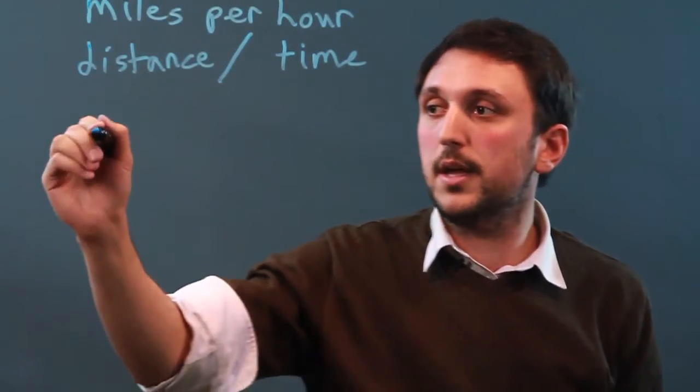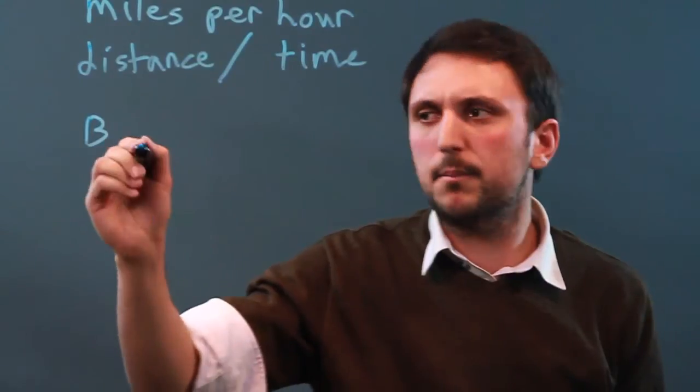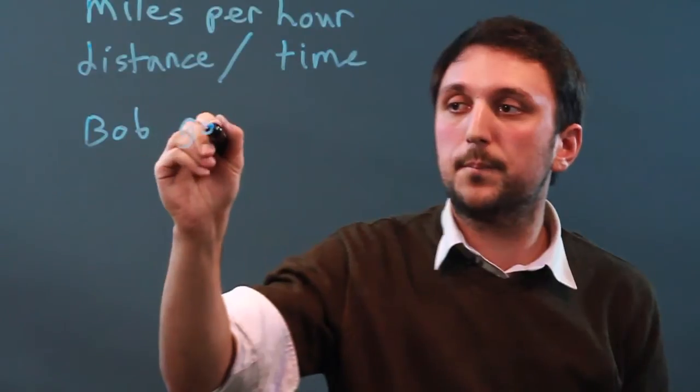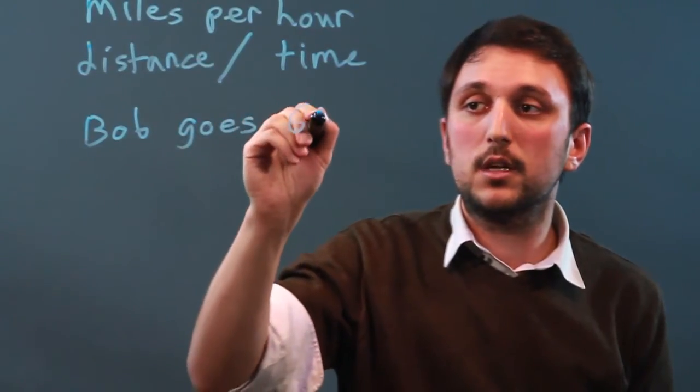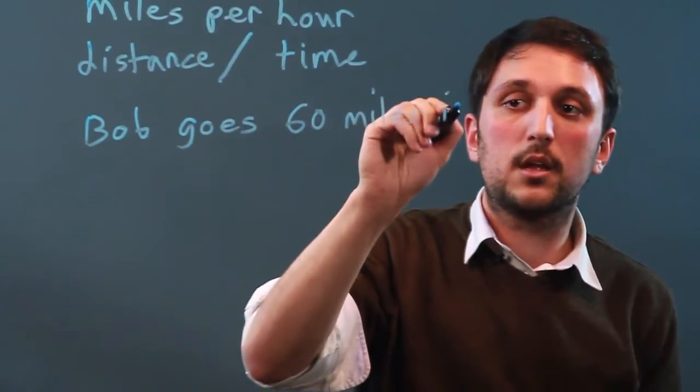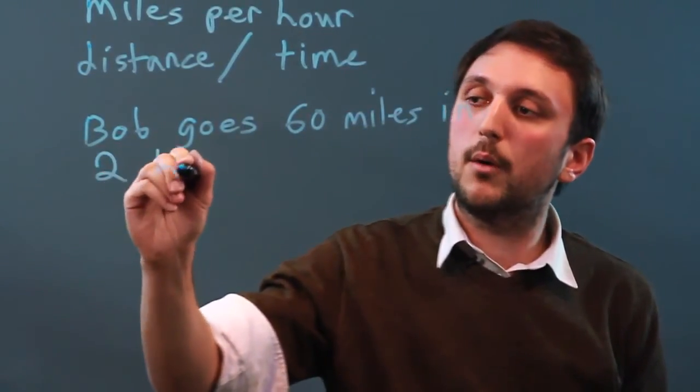So for example, let's say Bob. We're going to name him Bob. He's got to be Bob. Bob goes 60 miles in two hours.